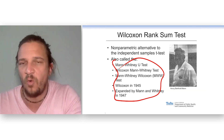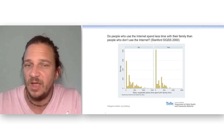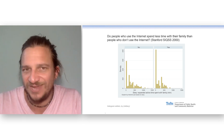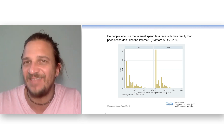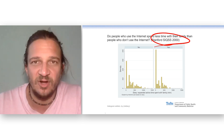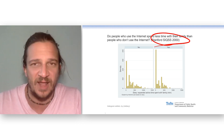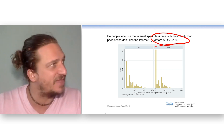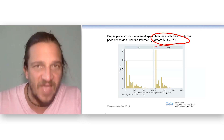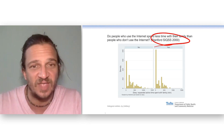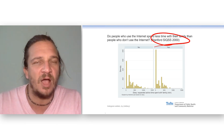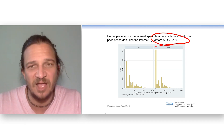I want to show you some cool data. These are older data — they come from when the internet first came out. It was so cool because you had people who did and didn't use the internet. There was a lot of debate at that time about how the internet was going to disrupt society, family, mental health, and relationships. These are data from the year 2000.